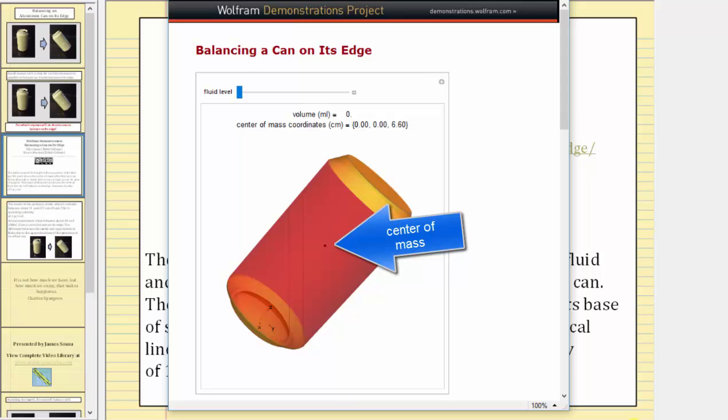The system will be stable if the center of mass, the black point, is above its base of support, which would be the edge. This means if the point is between the vertical lines, the can will balance on its edge. We assume a fluid density of one gram per cubic centimeter.